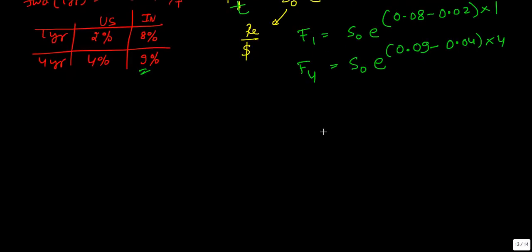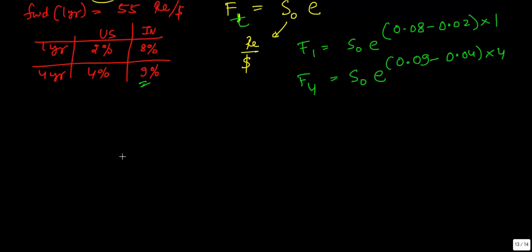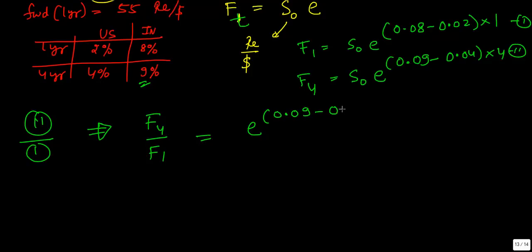This is the four year forward rate. Now, what you are required to do is since this S naught is not there, if this is your equation 1 and this is your equation 2, if I divide 2 by 1, equation 2 divided by equation 1, what I have on the left hand side is F4 divided by F1. Right hand side what I have is S naught will get cancelled and e to the power 0.09 minus 0.04 into 4 divided by e to the power 0.08 minus 0.02 into 1.